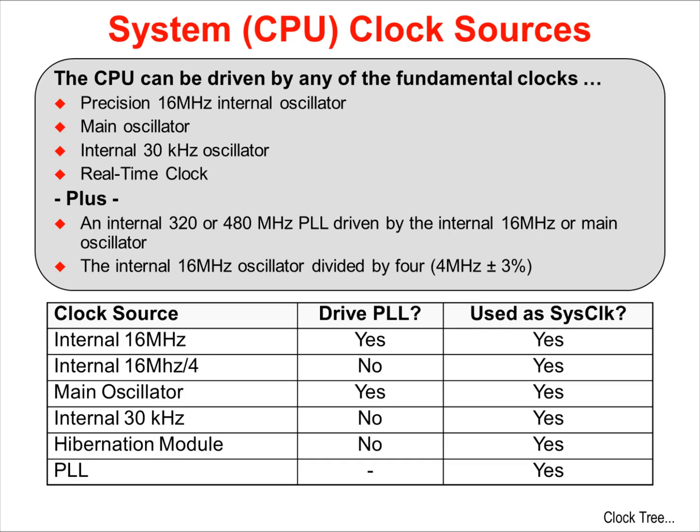These two PLL speeds are provided so that integer division is possible for a wide variety of application needs. We also have a divider on the internal 16 MHz oscillator that provides 4 MHz, plus or minus 3%. You have six different clock sources that can drive the CPU.